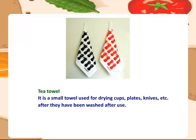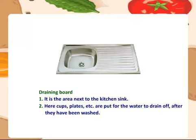Tea towel — it is a small towel used for drying cups, plates, knives, etc. after they have been washed. Draining board — it is the area next to the kitchen sink. Here cups, plates, etc. are put for the water to drain off after they have been washed.